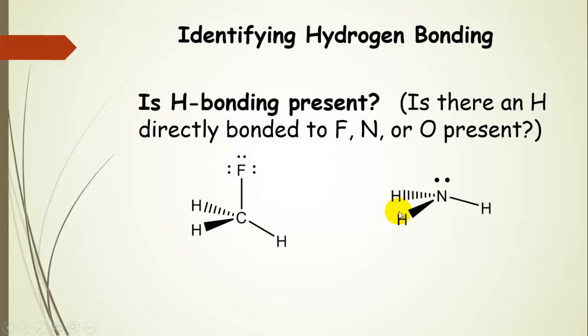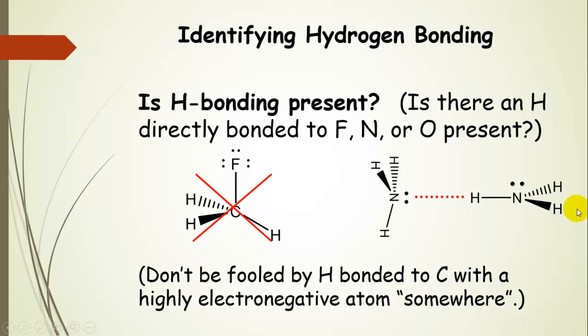Here's a fluorine bonded to carbon, and then there's a hydrogen over here. It might be tempting to think that this can hydrogen bond, but it can't. Because this carbon is not partially positive enough. The hydrogen is not even bonded directly to the fluorine. So this molecule cannot hydrogen bond with itself. Don't be fooled by a hydrogen bonded to carbon with a highly electronegative atom somewhere in the molecule.